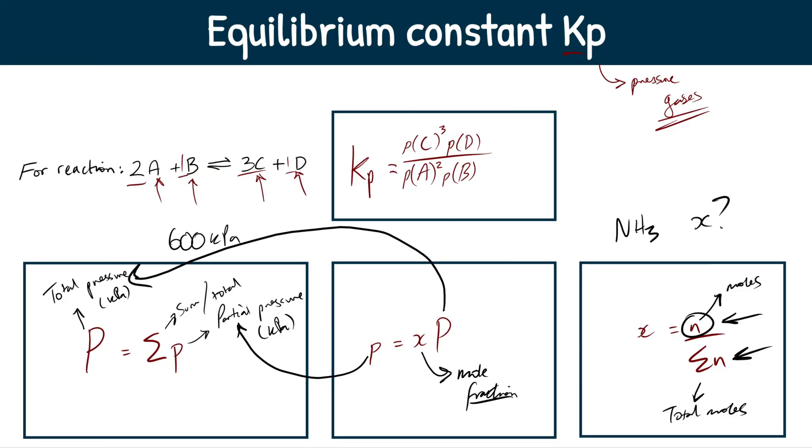And what you're going to often do is you're often going to be given some sort of data to work out the moles of each thing. You're going to funnel that into work out what the mole fraction is of each thing, and you're going to funnel that into work out what the partial pressure is of each thing, and you're going to funnel that into the Kp expression and work out what Kp is.